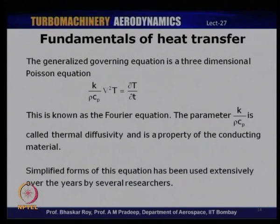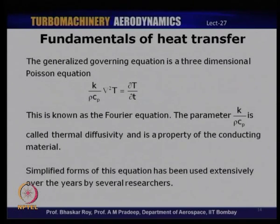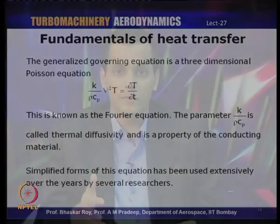This equation can be generalized to a three-dimensional Poisson equation form: K divided by rho*Cp times del-squared T equals del T by del t. The parameter K divided by rho*Cp is known as thermal diffusivity, which is again a property of the conducting material. This is known as the generalized Fourier equation, used in simplified versions with many assumptions in normal design-level calculations. Simplified versions of these equations are very extensively used by researchers working in the area of heat transfer and turbine blade cooling methods.